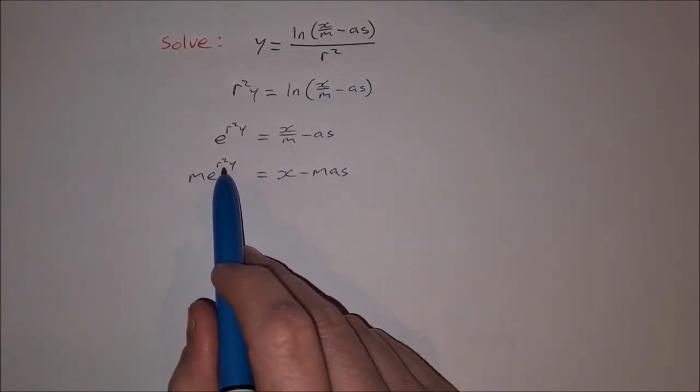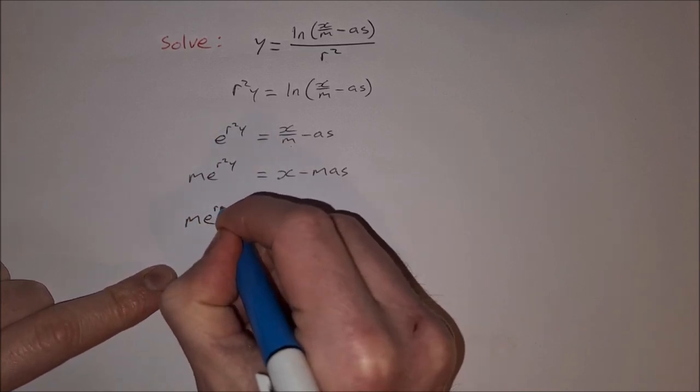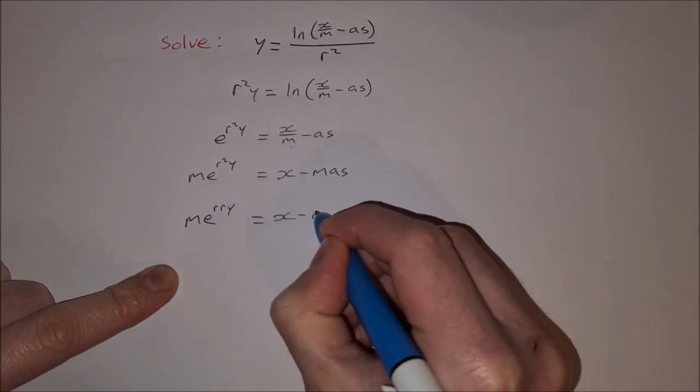And then just one last thing I'm noticing here, r squared. Well we can write r squared as r by r, and then we get merry Christmas.